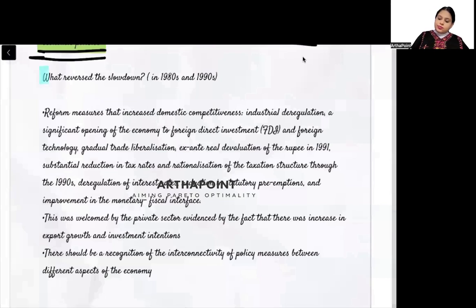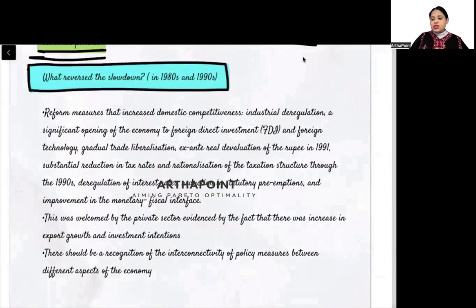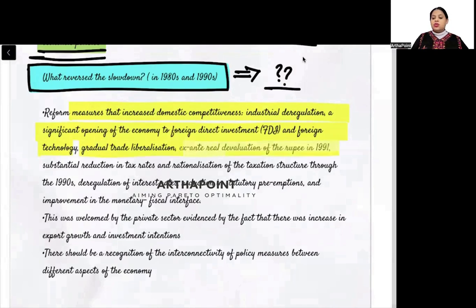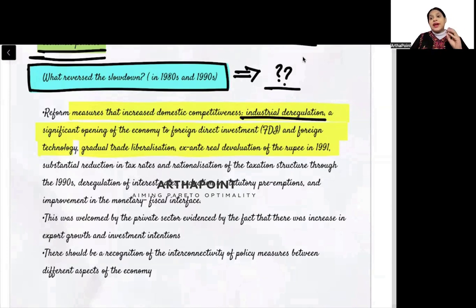What reversed the slowdown in the 1980s and 1990s? Reform measures that increased domestic competitiveness: first, industrial deregulation — whatever restrictions had been imposed on industry, such as who can enter, what can be produced, were removed. Second, significant opening of the economy to FDI — foreign direct investment was allowed into almost all sectors.